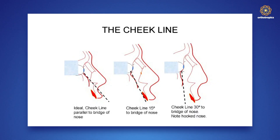I prefer the cheek line, which is a very simple line. You just take it from the centre of the lower eyelid and drop it vertically, touching the cheek. And there's a picture there where you can see this line. Ideally it should run level with the nose, but it can either be 15 degrees more than that or 30 degrees more than that, occasionally even more. You can see the typical facial changes that occur when you do that.